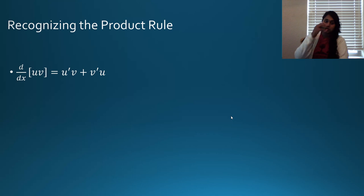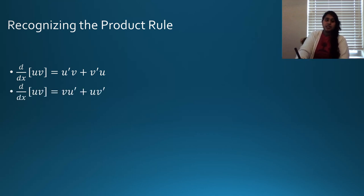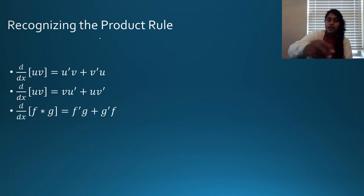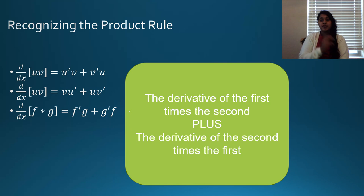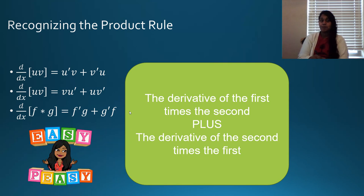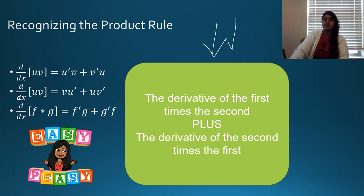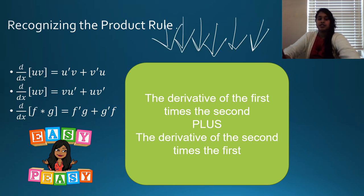You can recognize it as what I just told you, or remember our commutative property, which tells me that u prime v is the same as v u prime. I could see it as f and g: f prime g equals g prime f. But really what I want you to know is the concept: the derivative of the first times the second, plus the derivative of the second times the first. Memorize this. Say this as many times as you need to understand this rule.